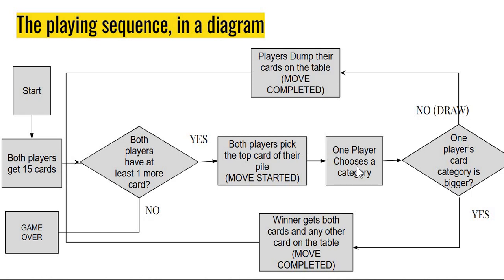One of the players chooses a category. Depending on whose chance it is, either the computer or the user picks a category. It could be height, it could be floor, it could be year built, and so on.